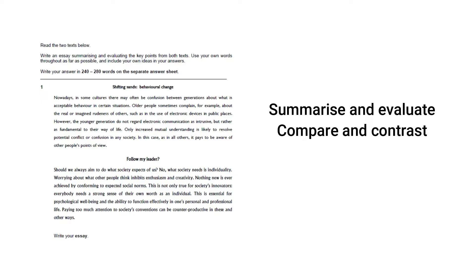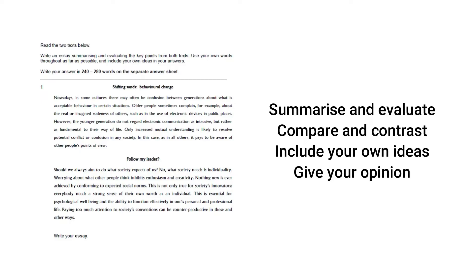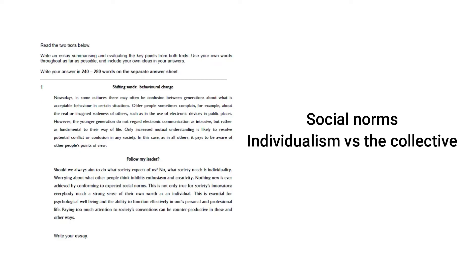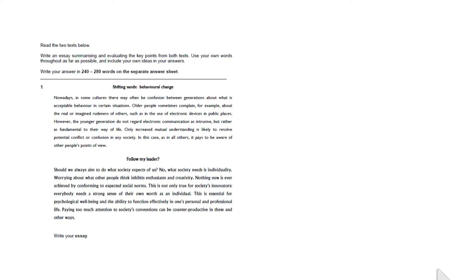You also need to expand on these two texts and include some of your own ideas, as well as give your opinion on the topic at the end of the essay. In this example, both texts talk about social norms, the problem of individualism versus the collective, as well as intergenerational problems in this context. Feel free to pause the video for a moment to read through the two texts before we continue.